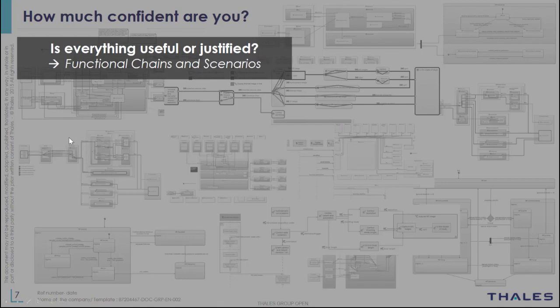For example, we can wonder: is everything useful or justified? You don't really need simulation to answer this question. Arcadia already brings the concept of functional chains and scenarios. If you are adopting an engineering driven by functional chains, then you are able to secure the solution definition looking through those functional chains. Because the functional chain basically describes how the system is fulfilling the system capability offered to the stakeholders. So if an element is not involved in the functional chain, it means that element is not contributing to the value the system brings to the stakeholders.